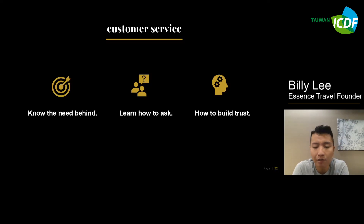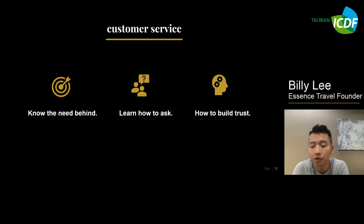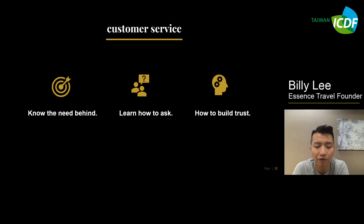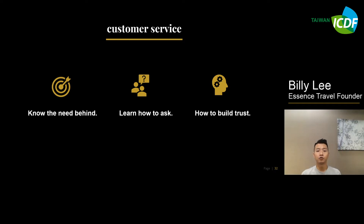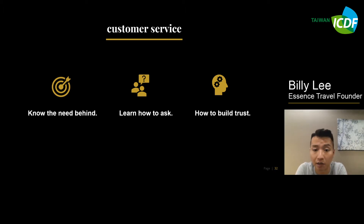When we talk about execution, it means a kind of customer service. Before you serve your customer, you need to think of three things. First, know the needs behind. Normally the customer will say something, but when they say something that is very bad, you have to think about what caused your customer to say that. So knowing the needs behind is very important. And then, learn how to ask. Do something before you ask. If you ask, you will know what types of customer, what types of brand, what types of needs they have, so you can provide them the right and good service. And build trust with the client, build trust with the customer.